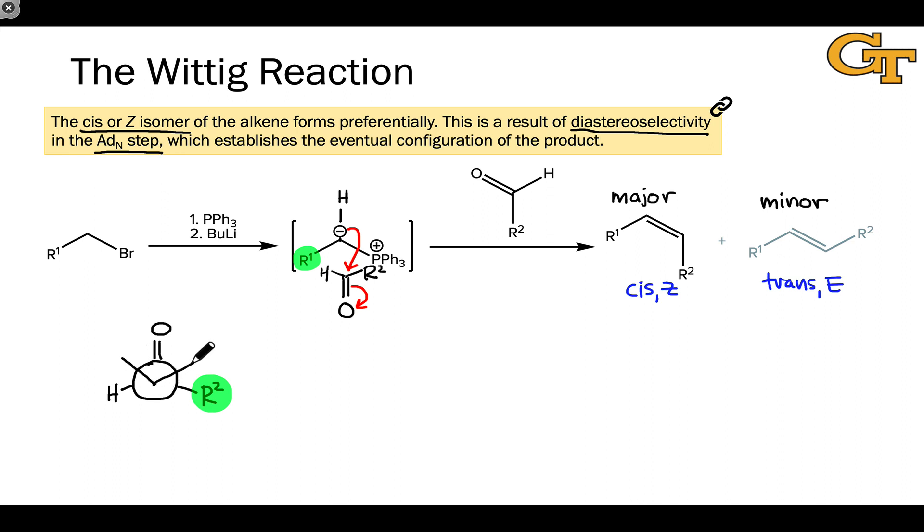Rounding out the Newman projection, we have the ylid in the front. And there's a question of how the ylid substituents are oriented. Where is the PPh3+ group? Where is the hydrogen? And where is the R1 group?